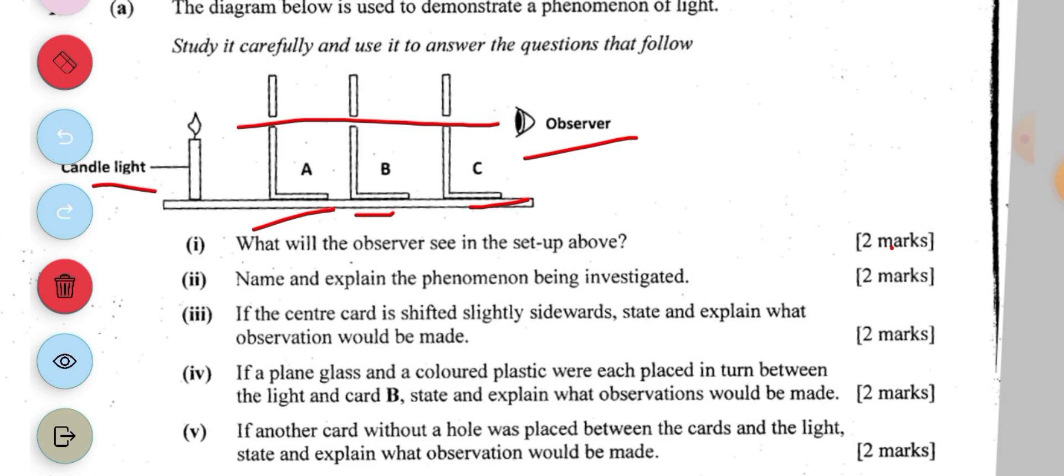What will the observer see in the setup above? The observer will see the candle light, not the candle. Then, name and explain the phenomenon being investigated. The phenomenon being investigated is rectilinear propagation of light, to show that light travels in a straight line.